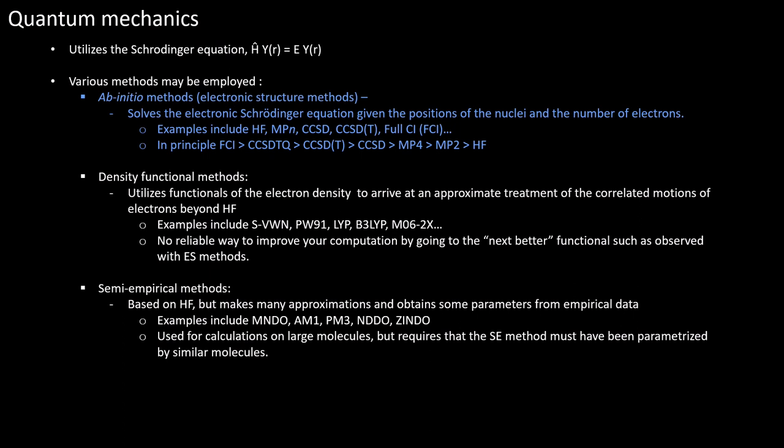Electronic structure methods solve the electronic Schrodinger equation given the positions of the nuclei and the number of electrons. In principle, one can systematically improve the methods by going from Hartree-Fock and adding on successive improvements of electron correlation to arrive at the exact or full CI limit.